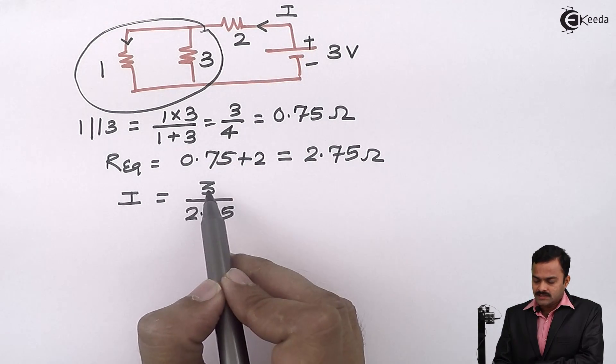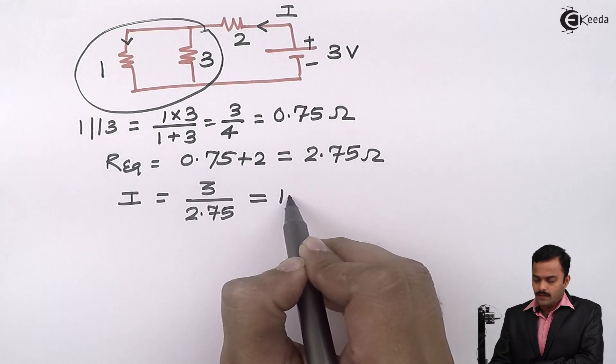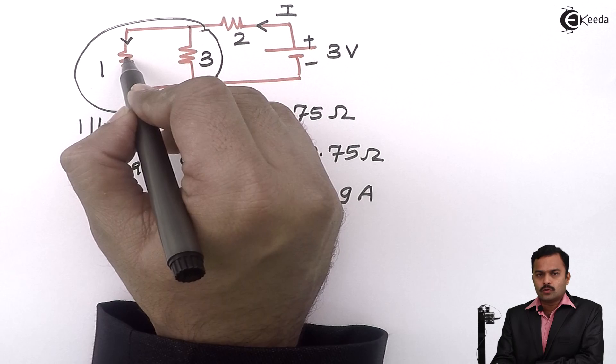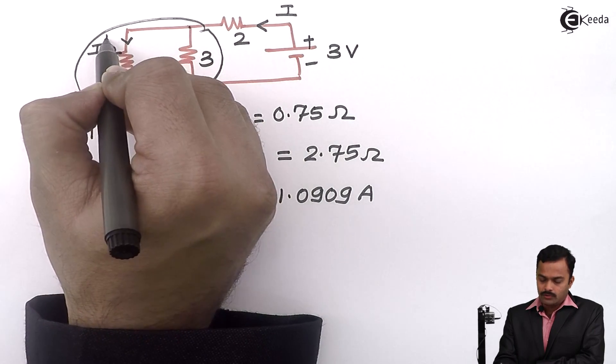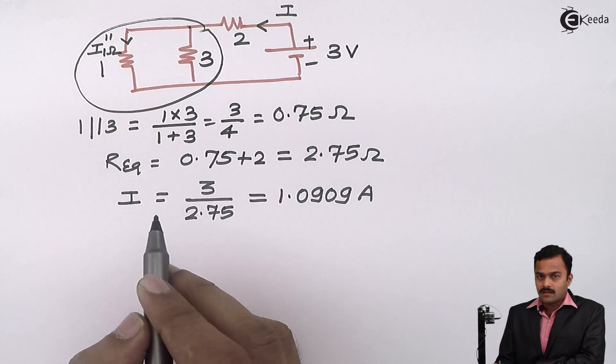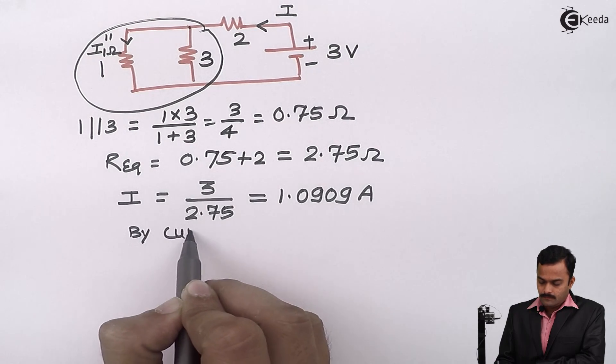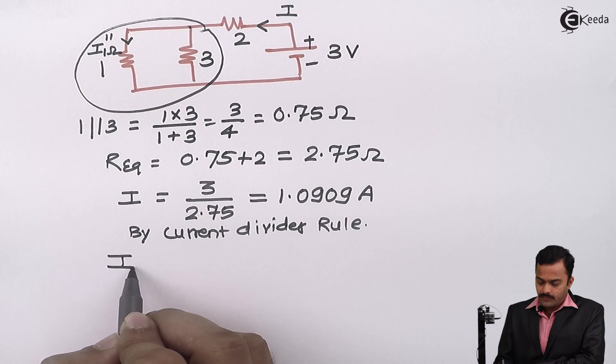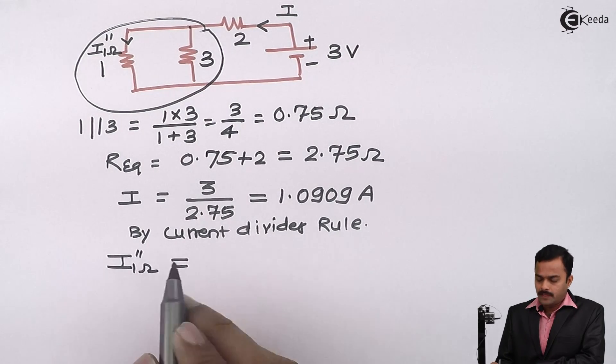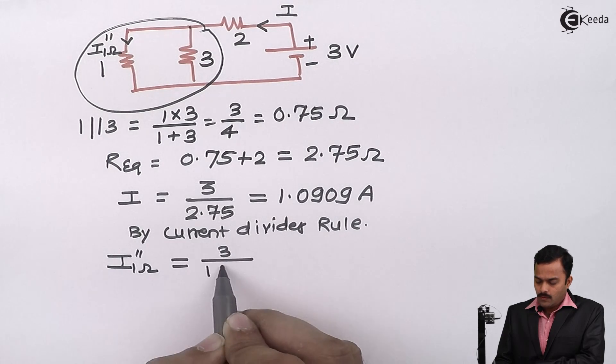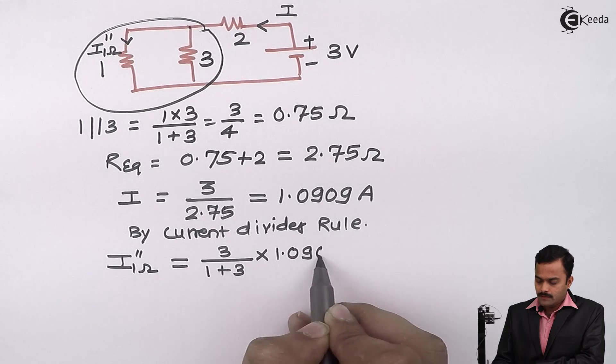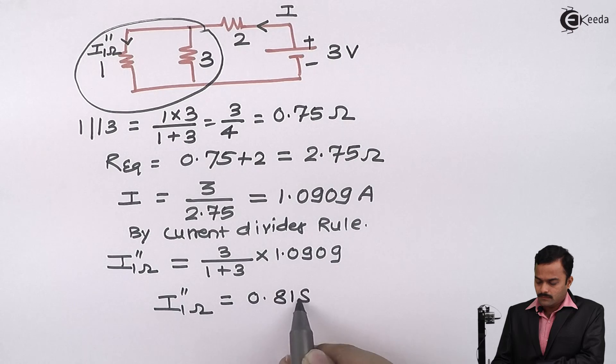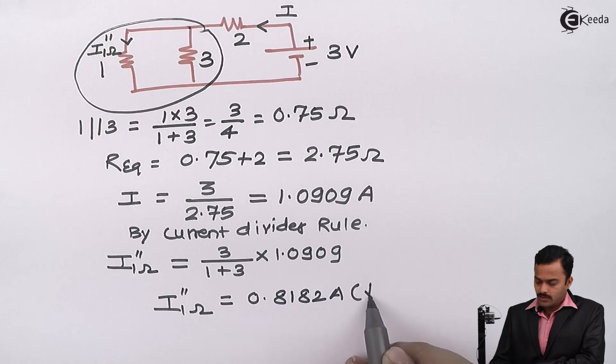Now, this current is splitting into 2 and objective is to get this current which I denoted as I double dash 1 ohm. I can use current divider rule. By current divider rule, I can say current flowing through 1 ohm resistance. Here, I will denote it I 1 ohm double dash 3 divided by 1 plus 3 multiplied by 1.0909. I am getting answer 0.8182 ampere. The direction of current is downward.